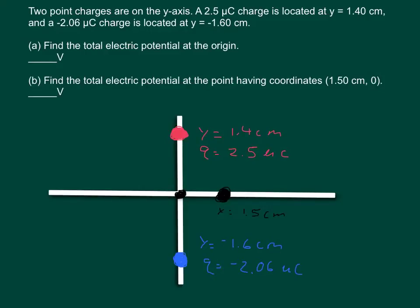Part A: find the total electric potential at the origin. And part B: find the total electric potential at a point having coordinates of 1.5 centimeters for x and 0 for y.